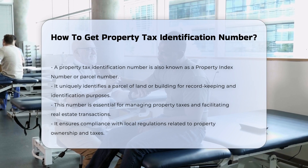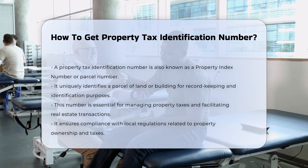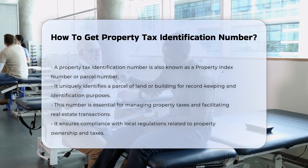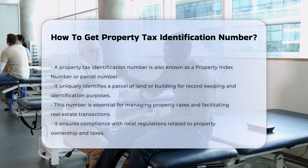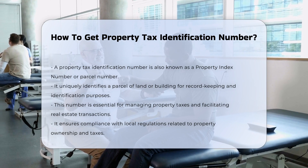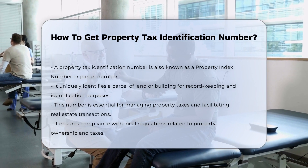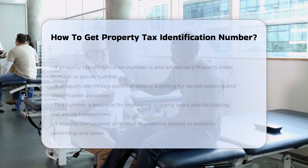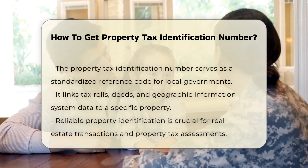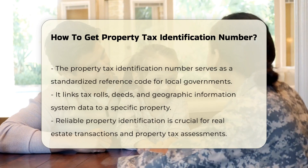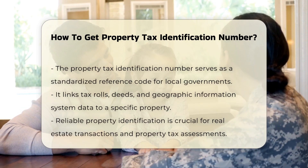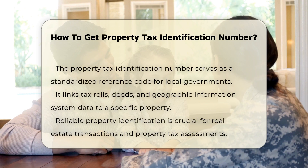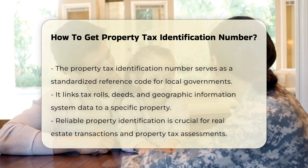Definition and Purpose: The property tax identification number serves as a standardized reference code, allowing local governments and other agencies to organize and manage property records efficiently. It links together tax rolls, deeds, geographic information system (GIS) data, and other information tied to a property.